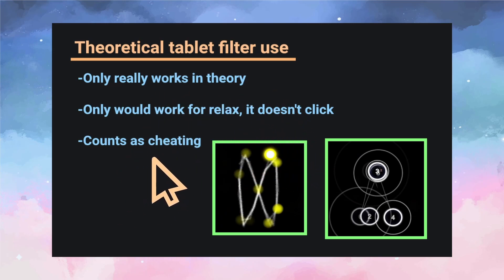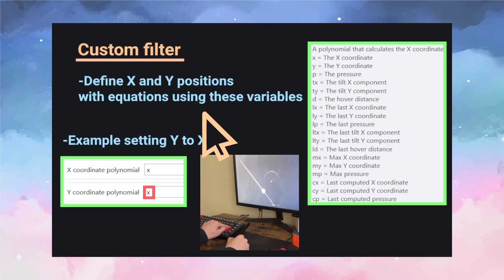And the final one is even if you did somehow get this to work, this is obviously disallowed. So at this point you might be thinking, what tablet filter is there that's so powerful we can define an entire beatmap using just its parameters? And the answer is the custom filter.